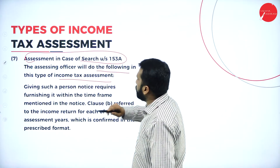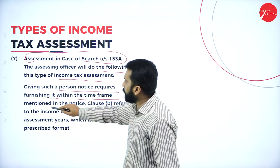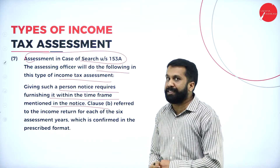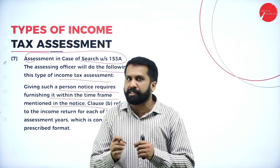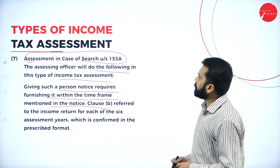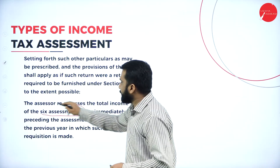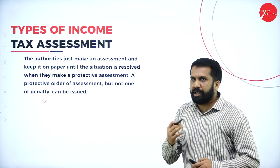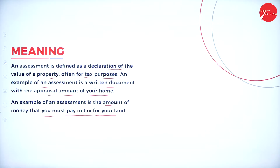Assessment in the case of search: the assessing officer will give the person a notice requiring them to furnish details within a time frame mentioned in the notice. If the income tax officer feels that you have not done your assessment properly, they will give you a notice and a certain amount of time within which you are supposed to submit everything. That is called assessment in the case of search. This can be done for up to six assessments — remember that point.